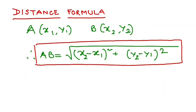Hello students, today we shall discuss a few questions from Exercise 7.1. All those questions are based on the distance formula. I hope all of you remember the formula. For your recall, if there are two points A and B, where A is (x1, y1) and B is (x2, y2), then the distance AB is the square root of (x2 minus x1) whole square plus (y2 minus y1) whole square.